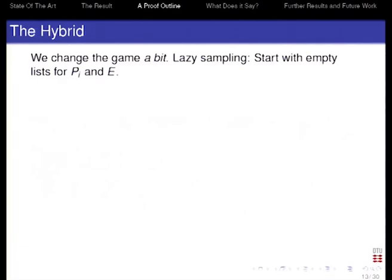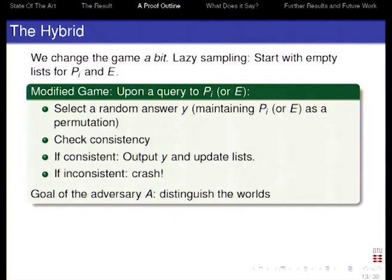Now I'll describe the hybrid — a slightly modified game we use to bound success probabilities. This is the most technical and involved part. Again it's lazy sampling, but this time when we receive a query to Pi or E, we focus only locally. We select a random answer Y, and the only thing we check is that Pi should be a permutation. Then we check for consistency — I'll say what that means in a second. If it's consistent, we output Y and update the list. If it's not consistent, we crash — we give up. Clearly this is something the adversary will be able to detect.